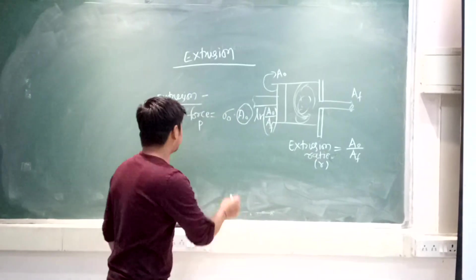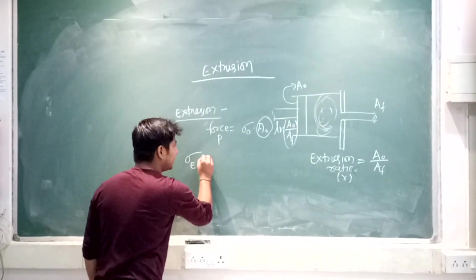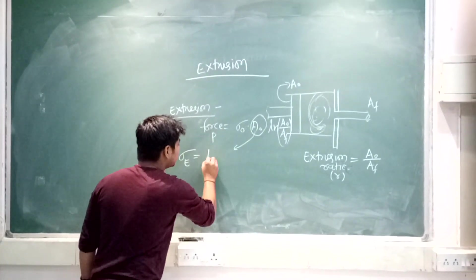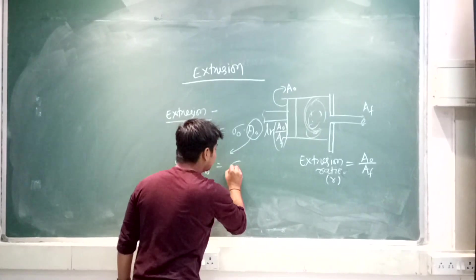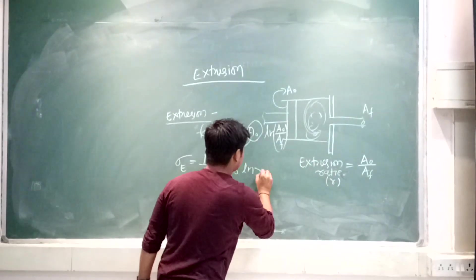Extrusion stress, this is sigma e, is nothing but P by A naught. This is P upon A naught, which is sigma naught into A₀ upon Af. The extrusion ratio is r.